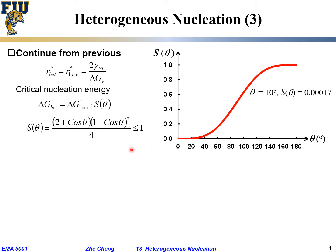When we plug in numbers — for example θ = 10° — f(θ) is one in ten thousand, extremely small. You can see how at only 10°, we are reducing the nucleation barrier by ten thousand times, giving a much much higher probability of nucleation compared to homogeneous. Even at θ = 30°, f(θ) is still only about 1.3 percent — still much much lower than the homogeneous nucleation barrier.